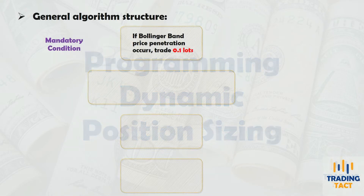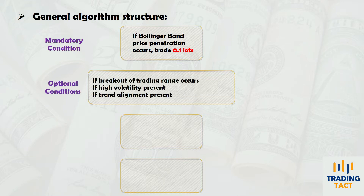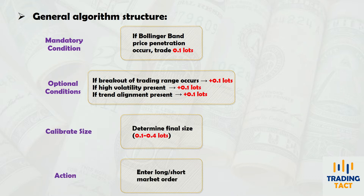Here's the algorithm structure for evaluating entries. If the baseline Bollinger Band entry condition is satisfied, I will trade 0.1 lots. I will include three optional entry conditions that detect trading range breakouts, high volatility, and long-term trend alignment. If true, each of these conditions should increase the probability of a successful trade. For every optional condition that is satisfied, I will increase the position size by 0.1 lots. Sizes will thus vary between 0.1 to 0.4 lots in increments of 0.1 lots.